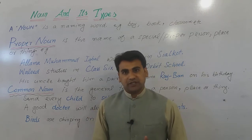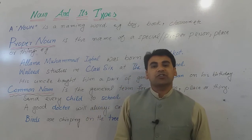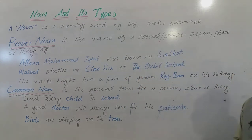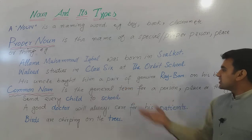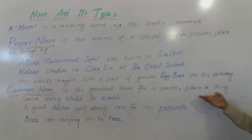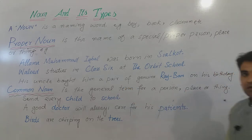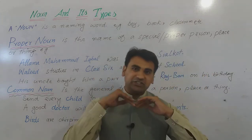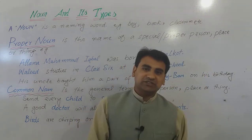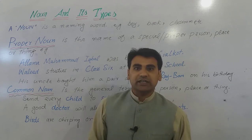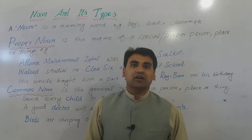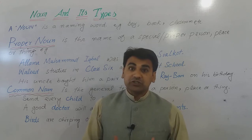On the contrary, we have common noun. It is the general term for a person, place or thing. Common noun — یہ کسی خاص شخص، چیز یا جگہ کے لیے عمومی لفظ ہے۔ For example, I am standing right now in the classroom, but which classroom is this? We don't know.